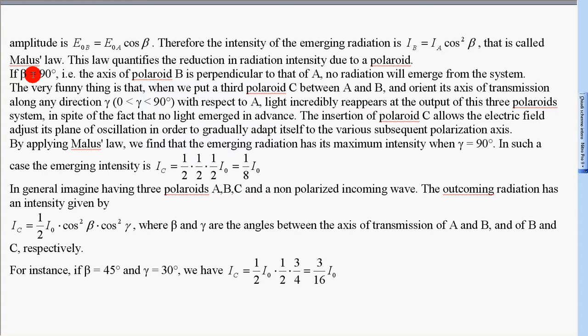If beta is equal to 90 degrees, i.e. the axis of polaroid B is perpendicular to that of A, no radiation will emerge from the system.